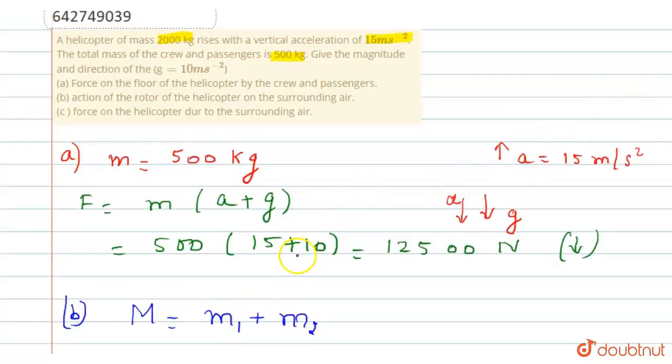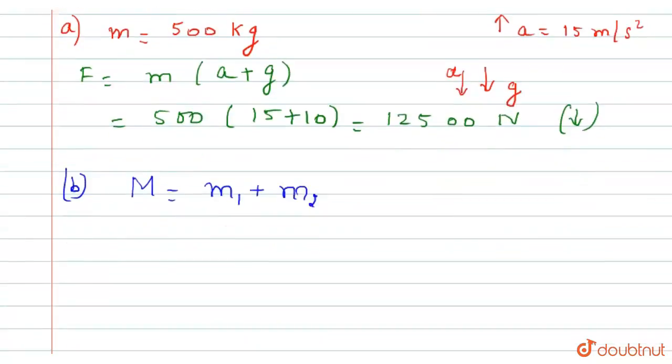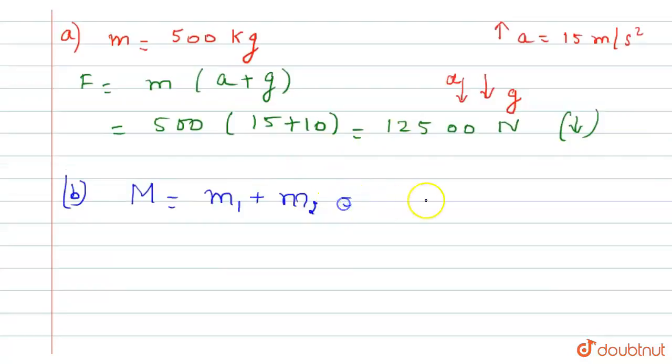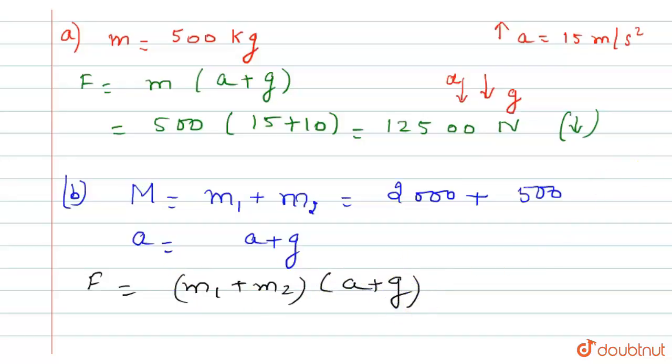Now we add these two masses: 2000 plus 500. And the acceleration, total acceleration is, we know that a plus g, right? So now we can easily find the force: F equals m1 plus m2 into a plus g. Now substitute the values.